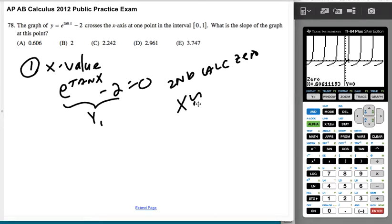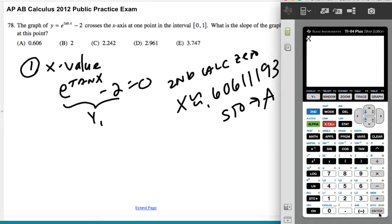So I want x is approximately 0.60611193, but I'm not going to take any chances. I'm storing this thing as a. So the way I do that is I quit out. I hit x. You'll see that pop up. Store as alpha a.